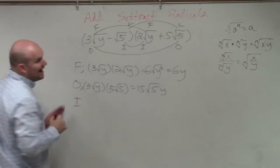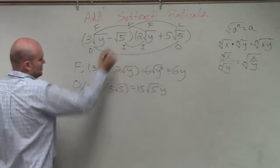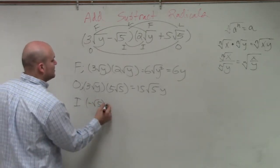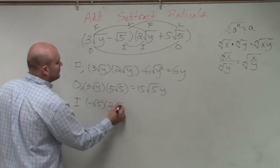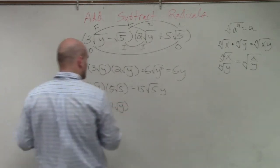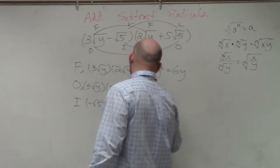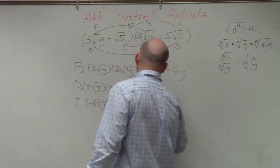The next one would be i, which represents your inner terms. So I have a negative square root of 5. Make sure you're very careful with the signs. Negative square root of 5 times 2 square root of y. So I have that equals a negative 2 times the square root of 5y.